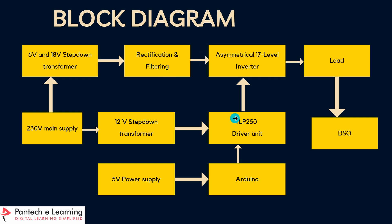From the TLP250 driver board, the amplified pulse is given to the MOSFET on the main circuit — that is the 17-level circuit. Across the 17-level inverter, we place a load resistor. Across that load resistor, we can see the 17-level output using a CRO or DSO.